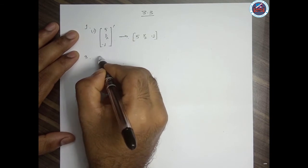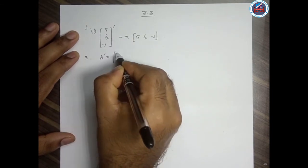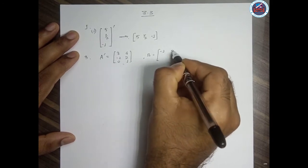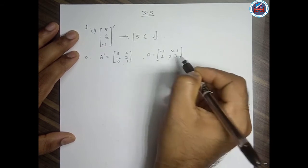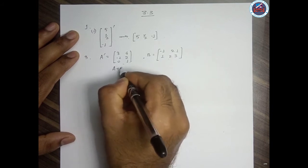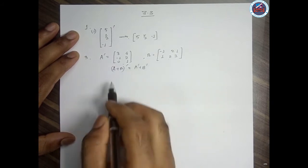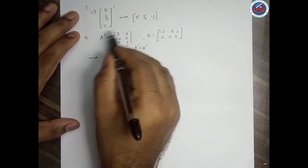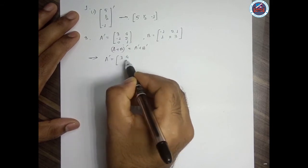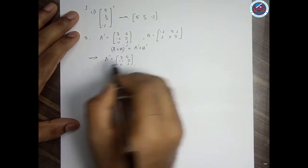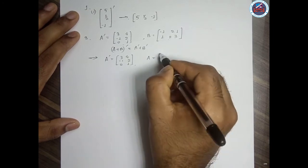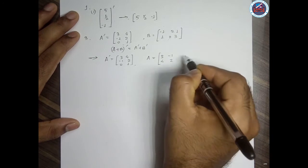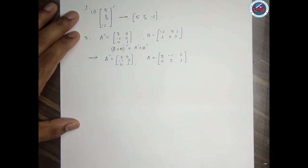Question number 3: A transpose is given as [3, 4; -1, 2; 0, 1] and B equals [-1, 2; 1, 1; 2, 3]. We need to verify that (A + B) transpose equals A transpose plus B transpose. Since A transpose is given, A is obtained by transposing it back, giving A = [3, -1, 0; 4, 2, 1].